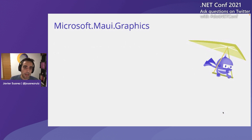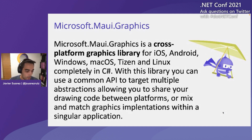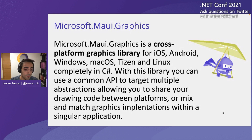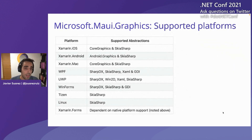With all that in mind, already now available in .NET MAUI, you can find Microsoft.Maui.Graphics. This is a cross-platform graphics library available for all the MAUI supported platforms and even some more. It is written in C# and offers an abstraction drawing API that falls back on different implementations on every native platform.